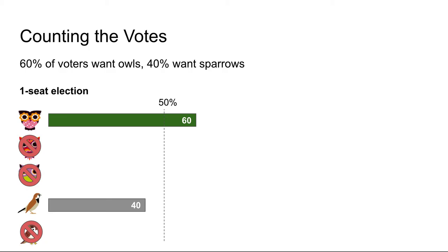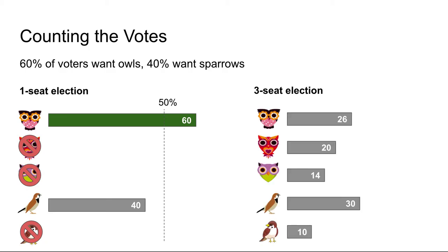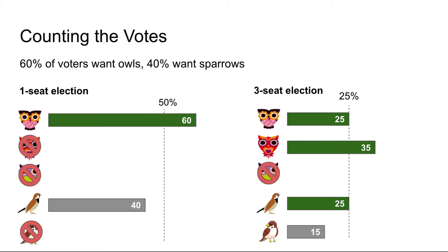What about electing three candidates at a time? We similarly start by counting all the first choices. To allow multiple candidates to win, we have to lower the threshold — not to some arbitrary number, but to the percentage at which a candidate is mathematically guaranteed a seat. In a three-seat race, that's 25%. Any candidate over that amount wins, and the votes are similarly counted in rounds until we have three winners. As you can see, we have elected two owls and one sparrow, which closely reflects what the voters wanted. A majority of voters wanted owls, so a majority of the seats were won by owls, and 40% wanted a sparrow, so they pick up only one seat.